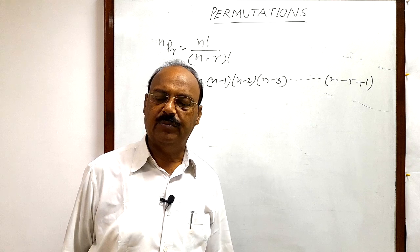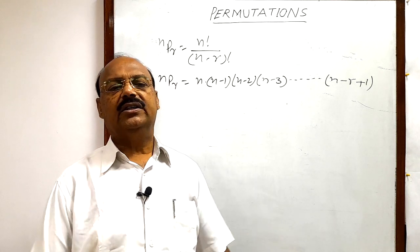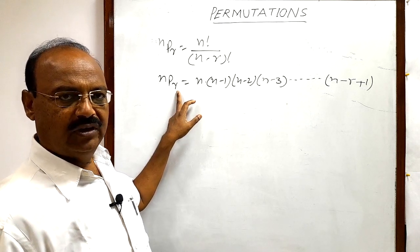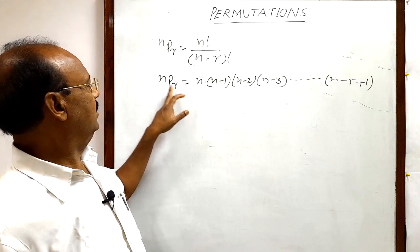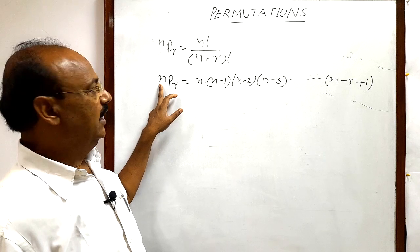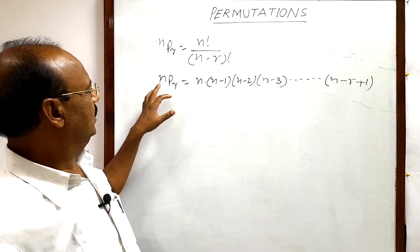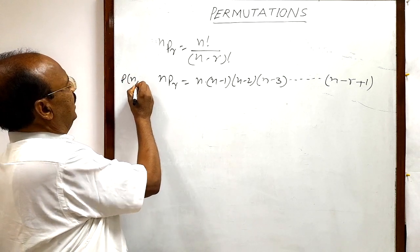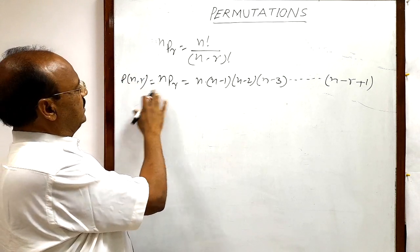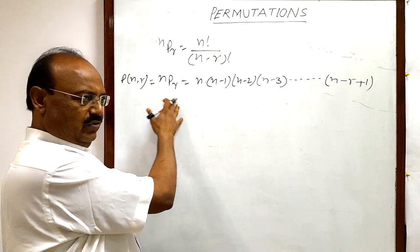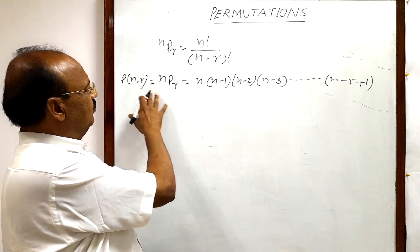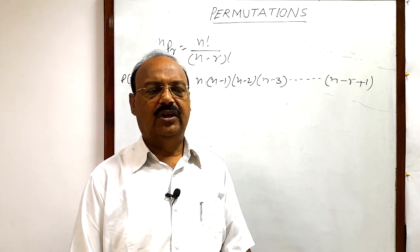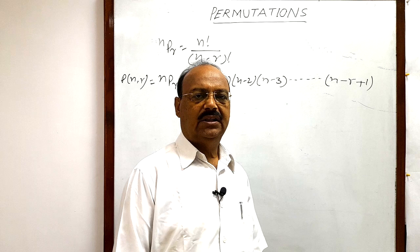Permutations means, as we have already discussed in the previous video, arrangements of R objects taken at a time out of given N total objects. We discussed that sometimes this NPR can be written as PNR also. Only the symbol way of representation is different, but the formula is the same. So let us start this very interesting topic with the help of a very simple question.